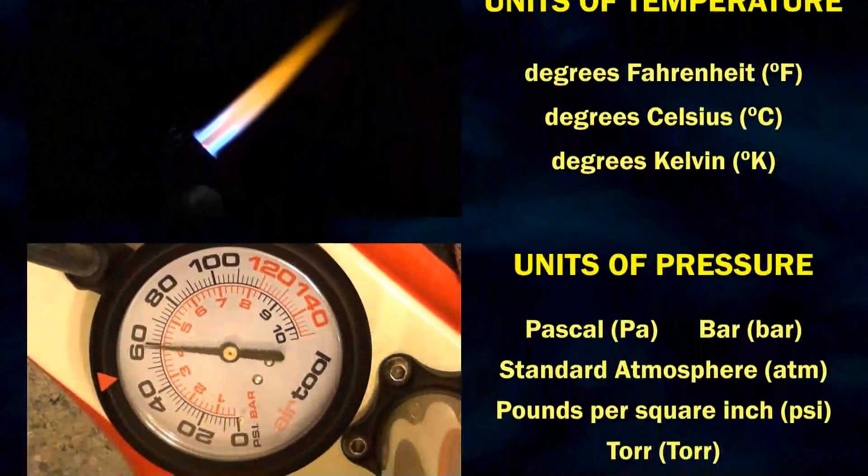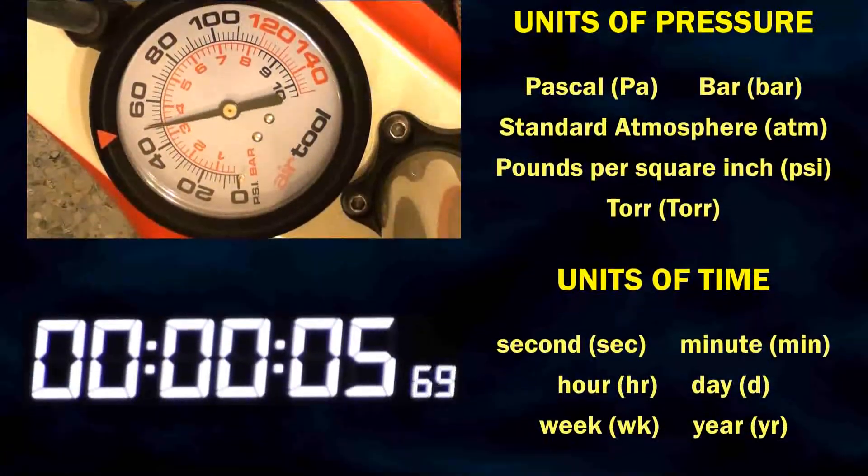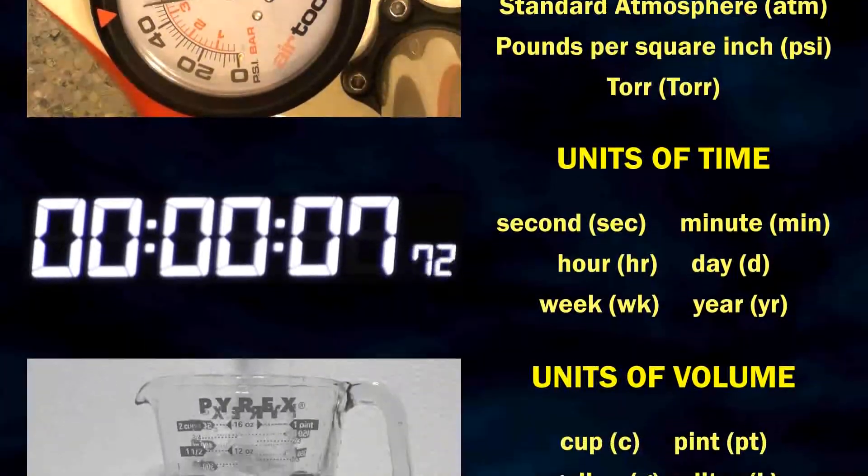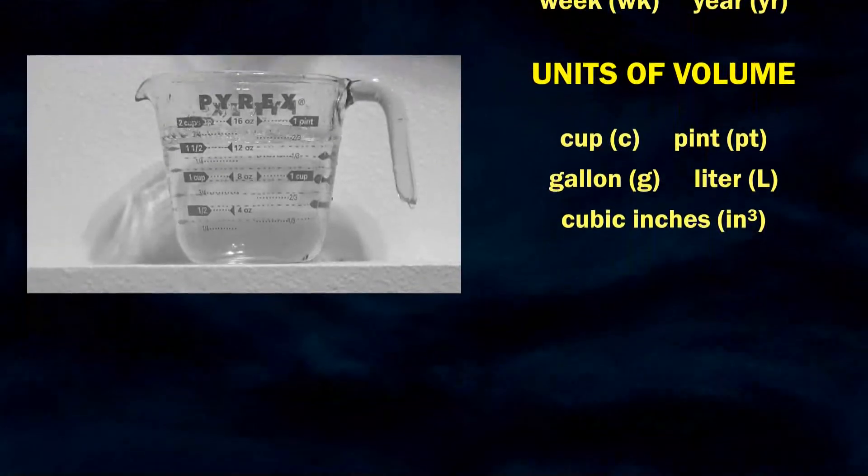There are different types of units that are used to measure all sorts of things. There are units that measure mass, volume, pressure, time, you name it. Anything that can be measured will need some type of unit to describe it.